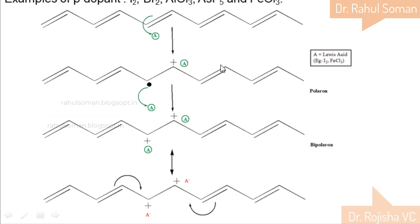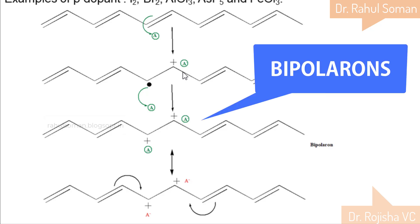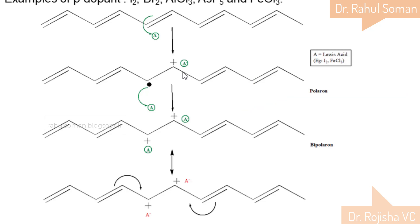Since we have a positive charge — an electron-deficient system — the neighboring pi bond electrons move towards the positive charge, making the structure conducting. That is the conductivity mechanism in the polaron. If we add more Lewis acid, one more radical ion is extracted, giving a two-positive-charge system called a bipolaron. The electrons can move towards the two positive sites, enhancing conductivity further.